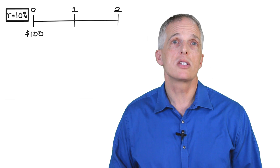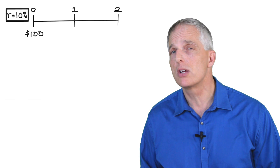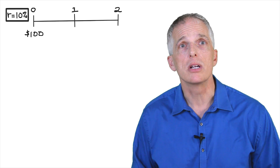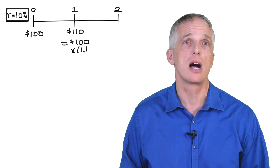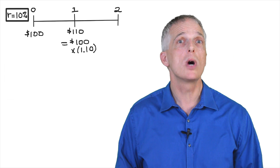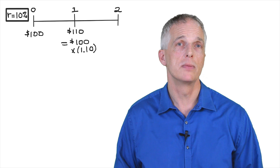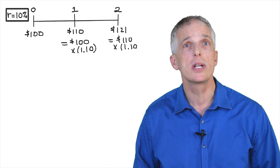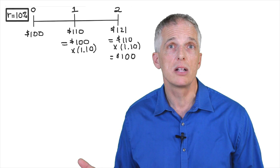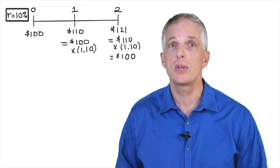People often find it useful to think about the time value of money using a timeline to mark the relevant cash flows in a problem. This is extremely useful when problems become complicated. Recall that we start with $100 and are offered a risk-free interest rate of 10%. We denote today as period zero on the timeline, and the hash marks represent years one and two. After one year, our investment of $100 would grow to $110, which is equal to $100 times one plus the 10% interest rate, or 1.10. After two years, our investment would grow to $121, which is our year-one account balance of $110 times 1.10.